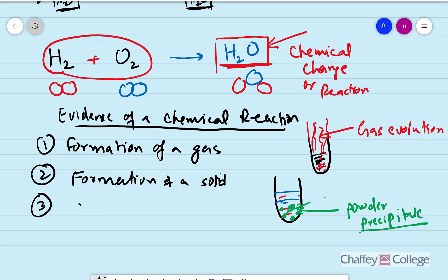Another evidence is change in color. Imagine we are mixing two colorless liquids and suddenly there is a blue color — that would mean something new has formed whose color is blue. Color change is an evidence of a chemical reaction. One famous example is fireworks on the 4th of July, where different colors are displayed because a chemical reaction is taking place.